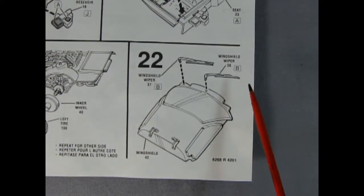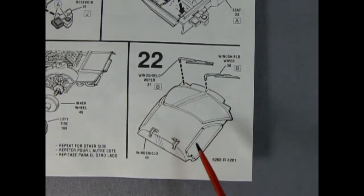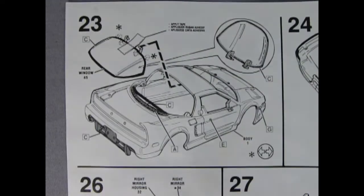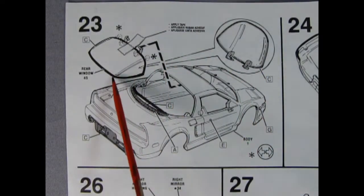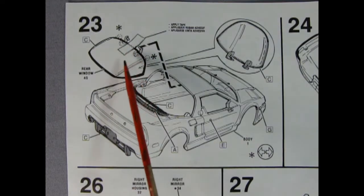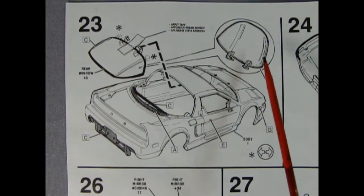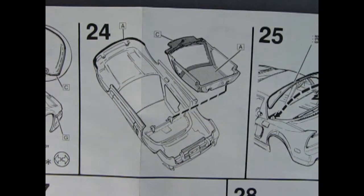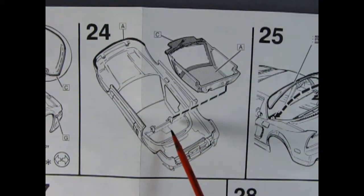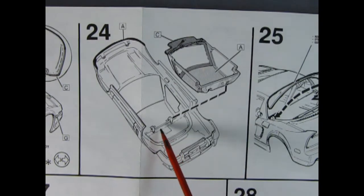In panel 22, our little windshield wipers drop into place on our windshield. Panel 23 shows our rear window being put in place. Now there are these little hooks on here. It says to put a little piece of tape on there just to get it all aligned. Now in panel 24, our glass will pop into place and it will hook up with the hinges here. And then you can remove the tape from the back and the window will be ready to open.